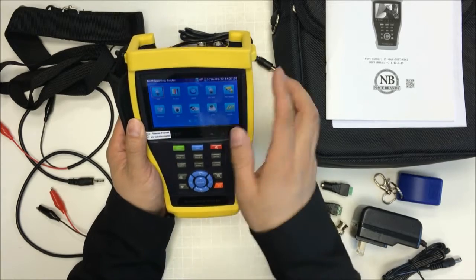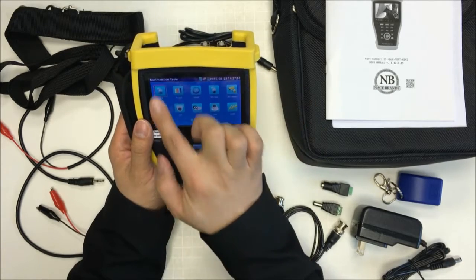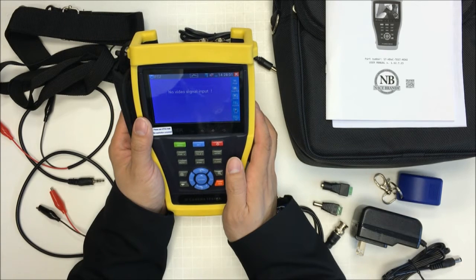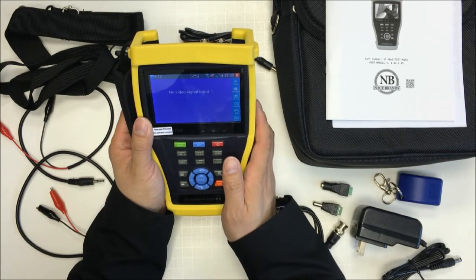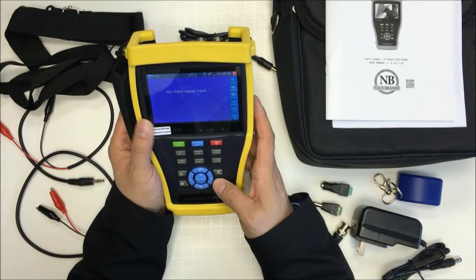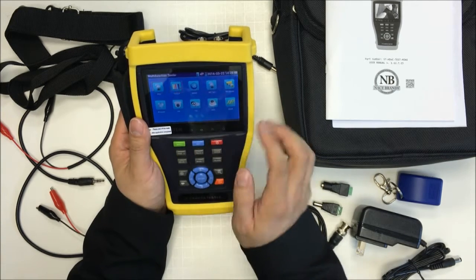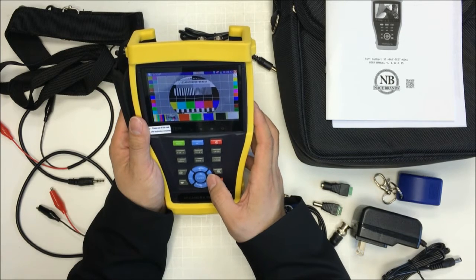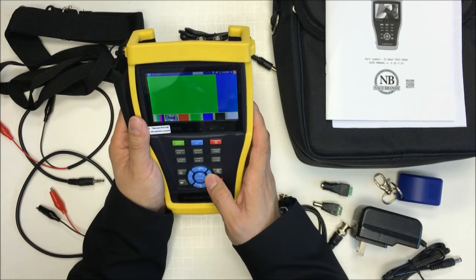Let me try with the menu function. On the PTZ camera, PTZ function you can test the PTZ camera. TV output. You can have different color output.